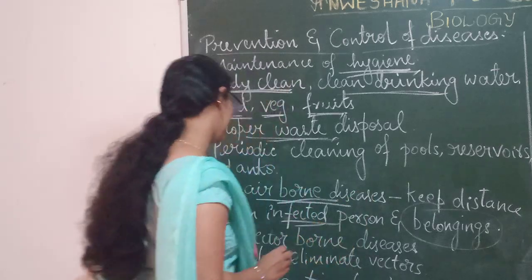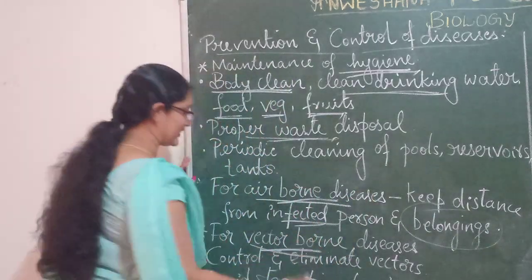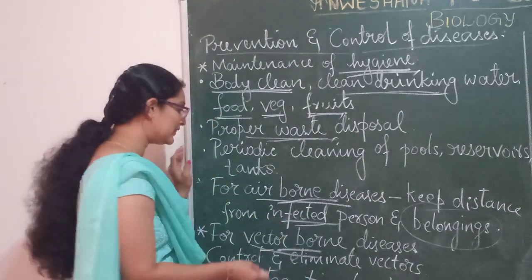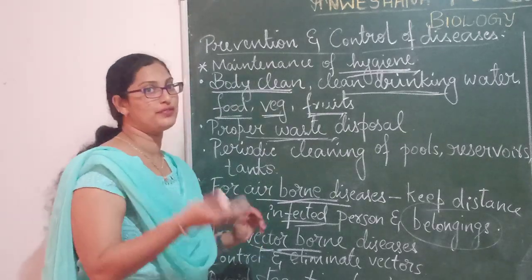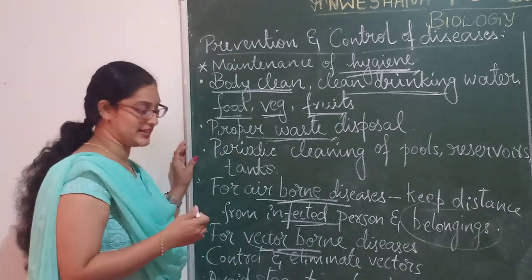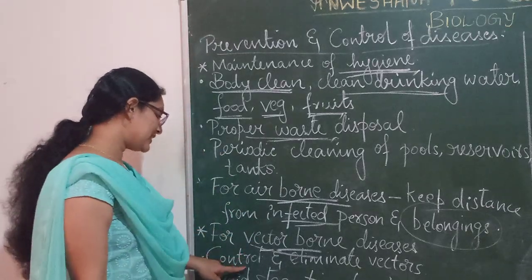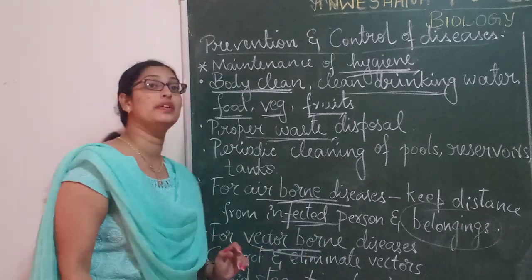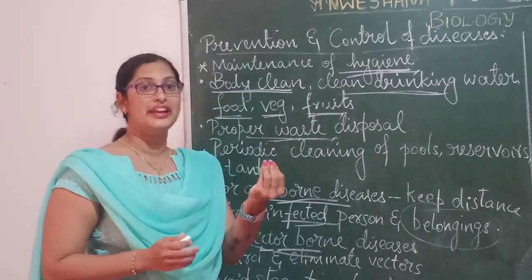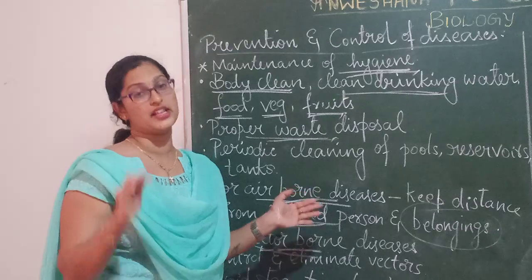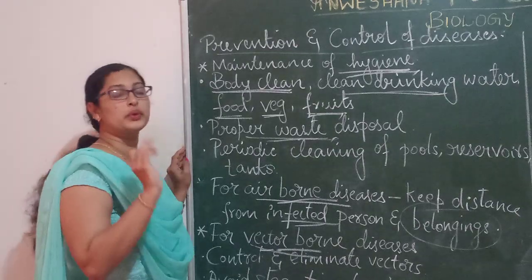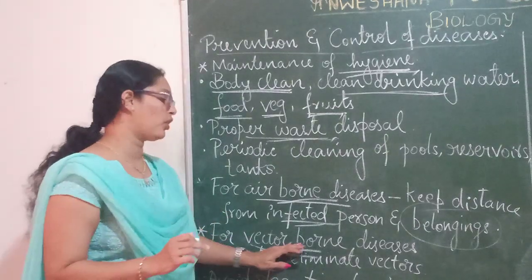For vector-borne diseases — vectors are carriers — malaria, amoebiasis are examples. Various insects like houseflies and mosquitoes are carriers of diseases. So first is to control and eliminate the vectors. You will have to see where they exactly breed and eliminate their breeding places or kill their larvae. This is a very good measure to keep away vector-borne diseases.